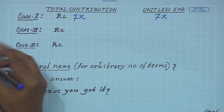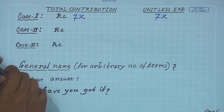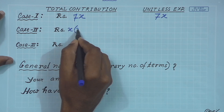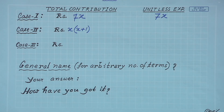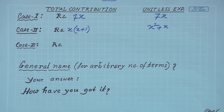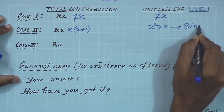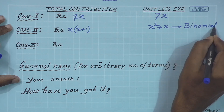Suppose you are contributing x plus 1 rupees each and you are x in number. Then what will be the total contribution? It will be x into (x plus 1), which after simplifying gives x squared plus x. Here we have two terms: one is x squared and the other is x. The name given to this expression with two terms is binomial.